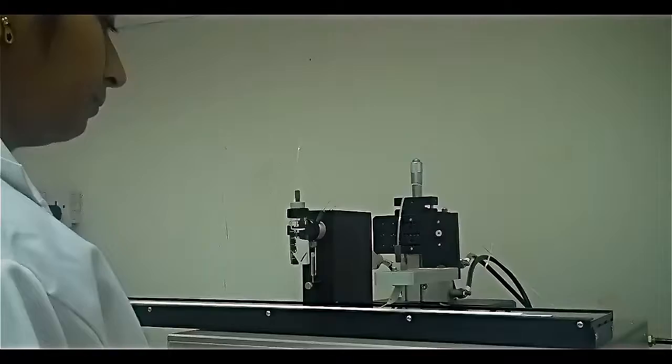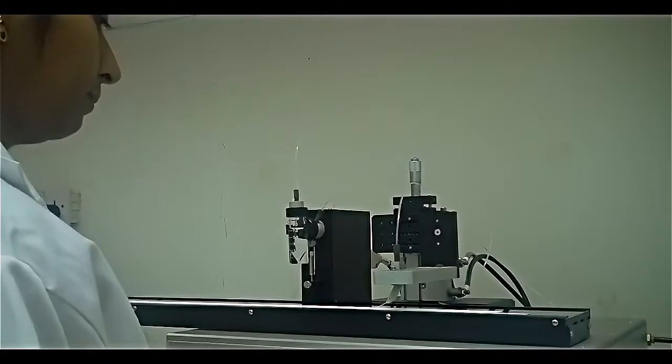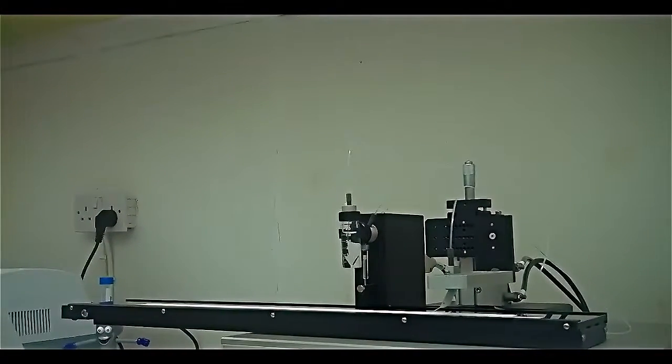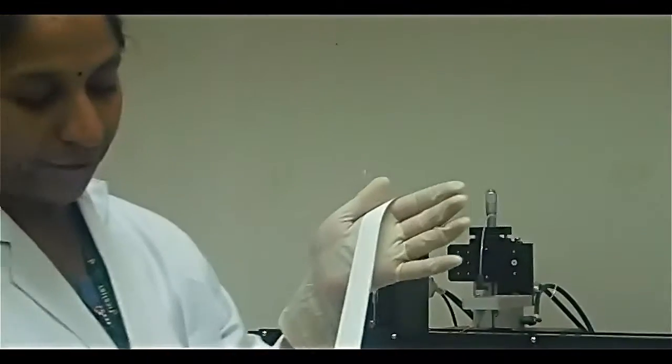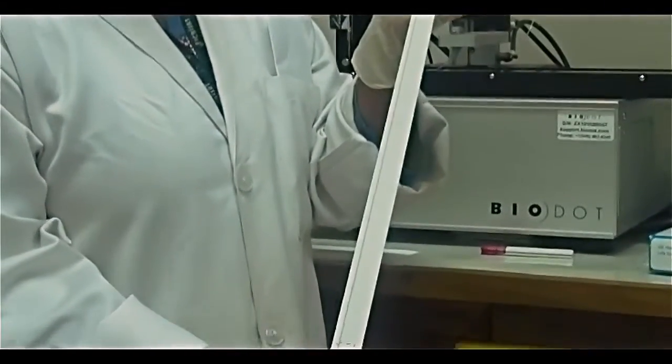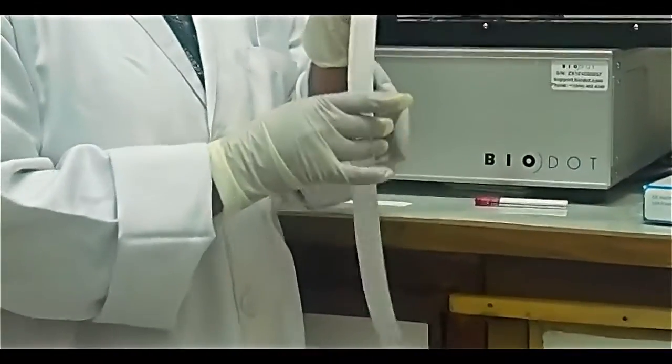The major reagents that we dispense on the nitrocellulose membrane are antigens and conjugates. Now you can see the required chemical is already dispensed on this membrane uniformly, which we cannot do manually.